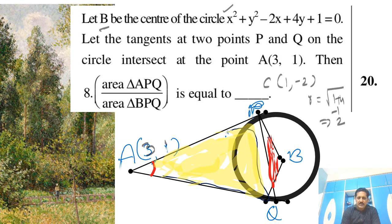So both the tangents are intersecting at the point A(3, 1). Then the question is 8 times of area of triangle APQ—I have shown here in yellow—that is the area of the triangle APQ to the area of the triangle BPQ, so which is in red color BPQ. So this ratio you have to find and multiply with 8.